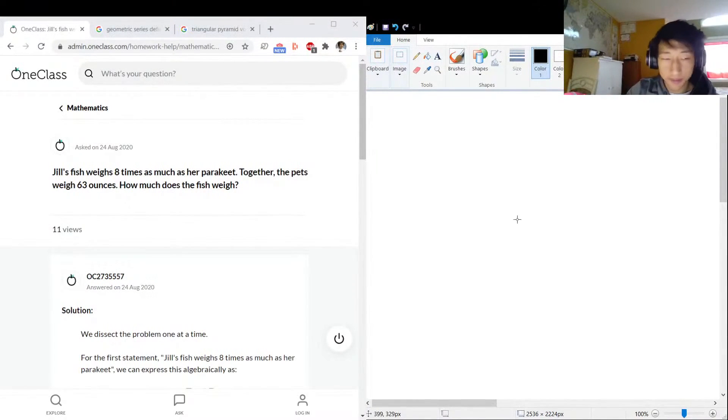Our next question, also a little bit math magic. So we got Jill, and she got a fish that is eight times heavier than a parakeet. That's a heavy fish. I think a parakeet is a bird, right? Together, the parakeet and the fish are 63 ounces. That's a couple pounds, I think there are 16 ounces in a pound. How much does the fish weigh? Let's ignore all the biology stuff and let's just focus on the math.